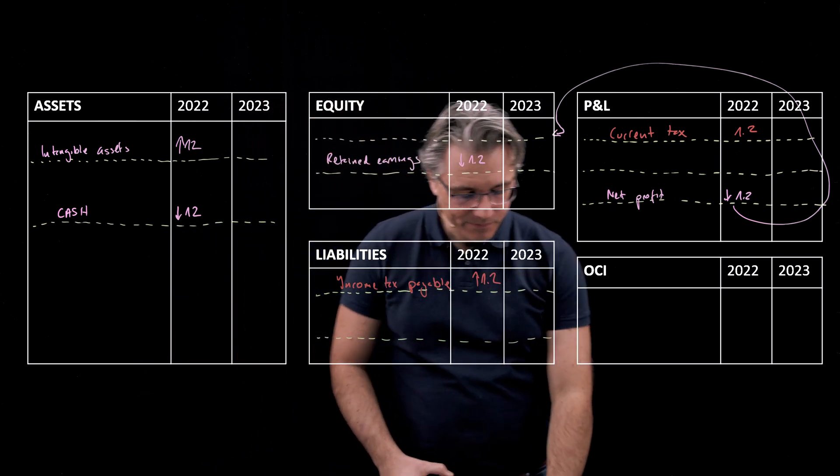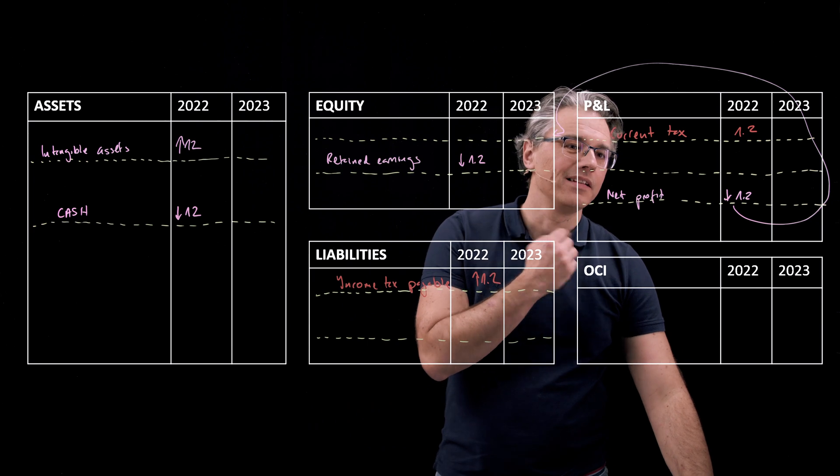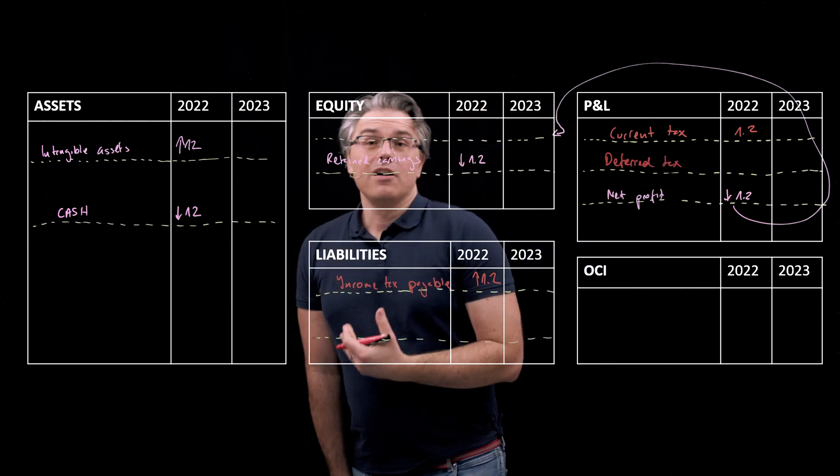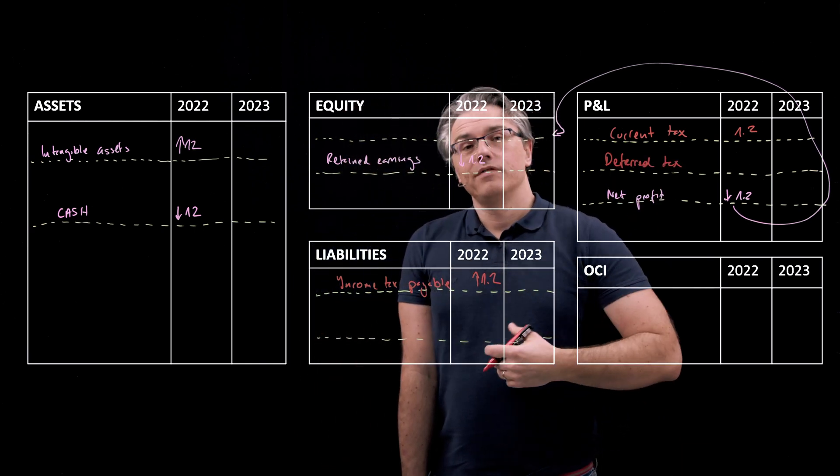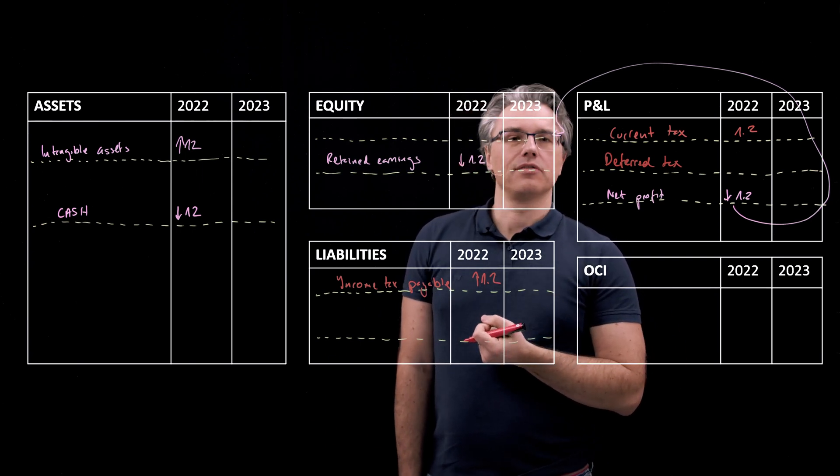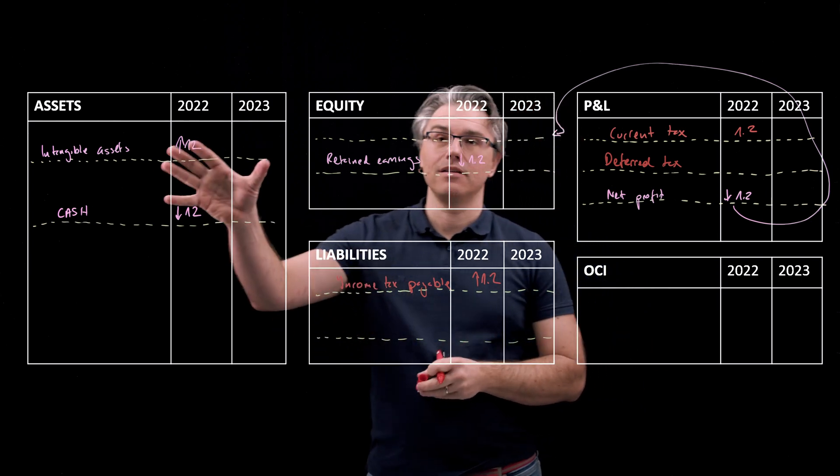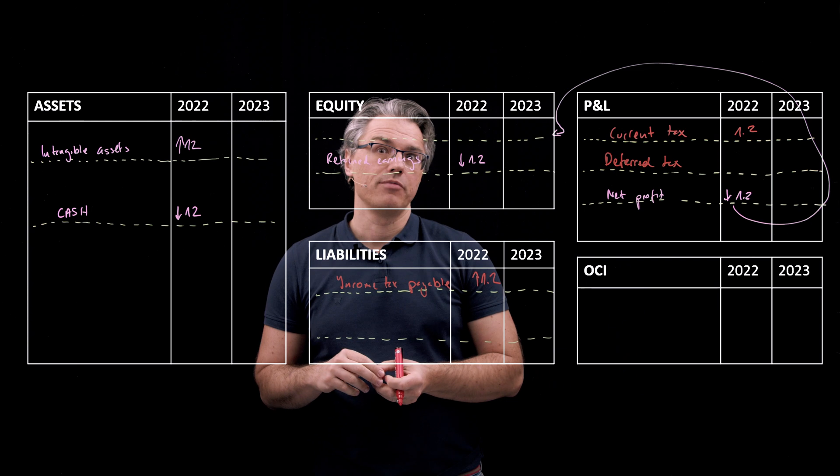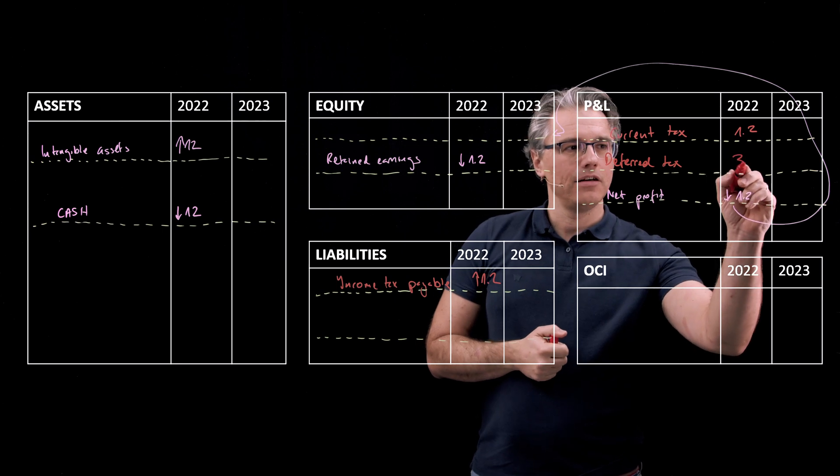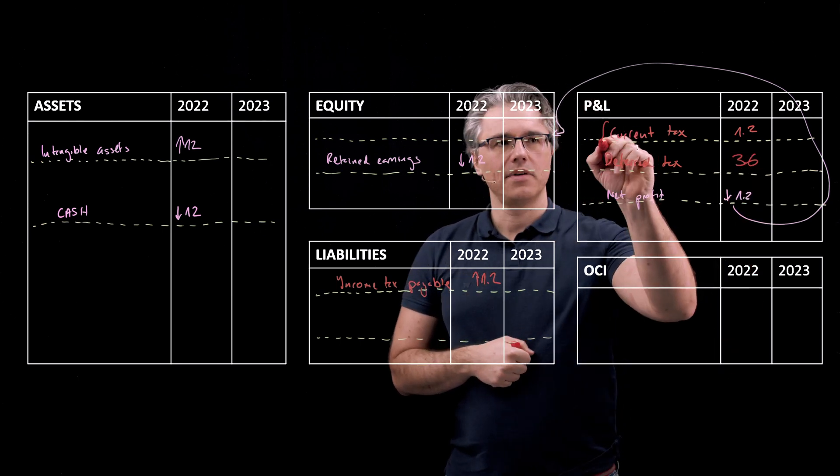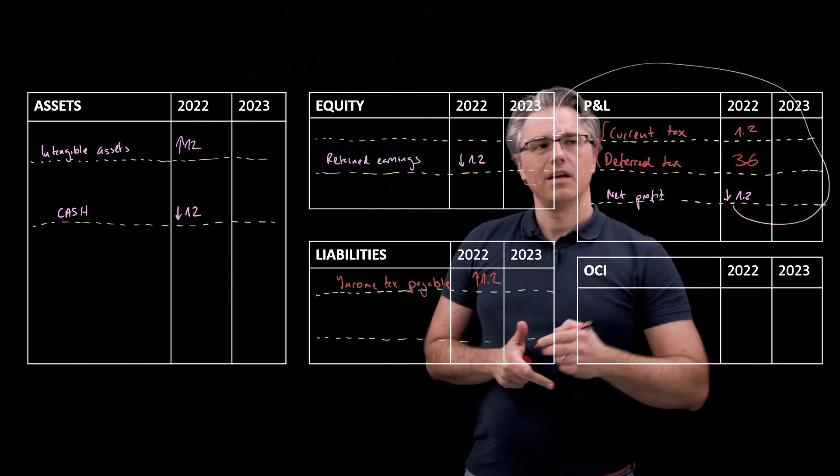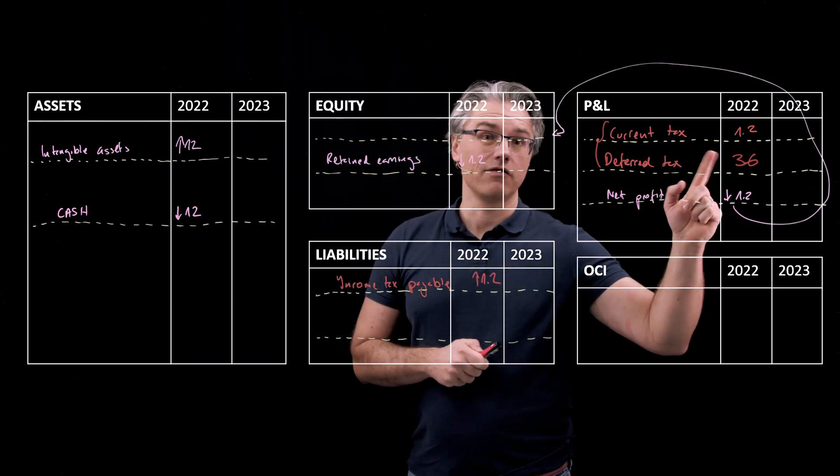However, I also said that this current tax should be supplemented with deferred tax, because I wanted to wait with the recognition of the benefit associated with the amortization of the license until the time when we actually start to amortize it for financial reporting purposes, which is not the year 2022, it was the year 2023. And I said, let's load the tax expense, and the tax expense being these two items combined, with an additional 3.6, which is kind of removing the effect of the tax saving from the year 2022.